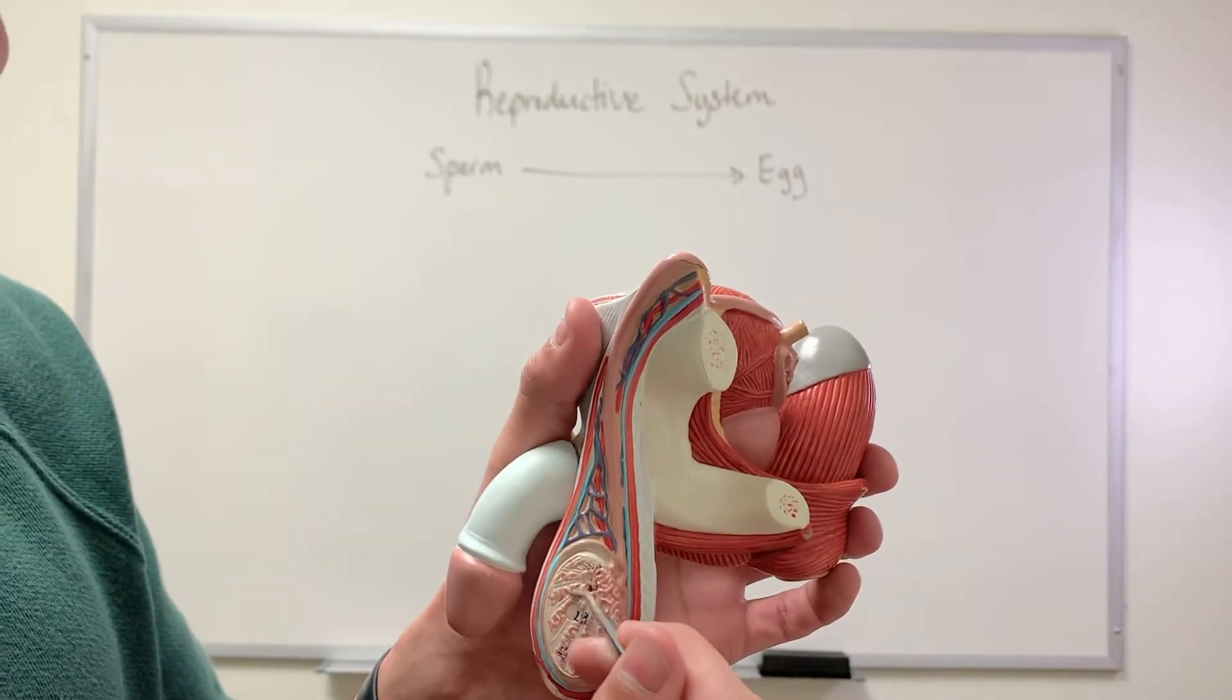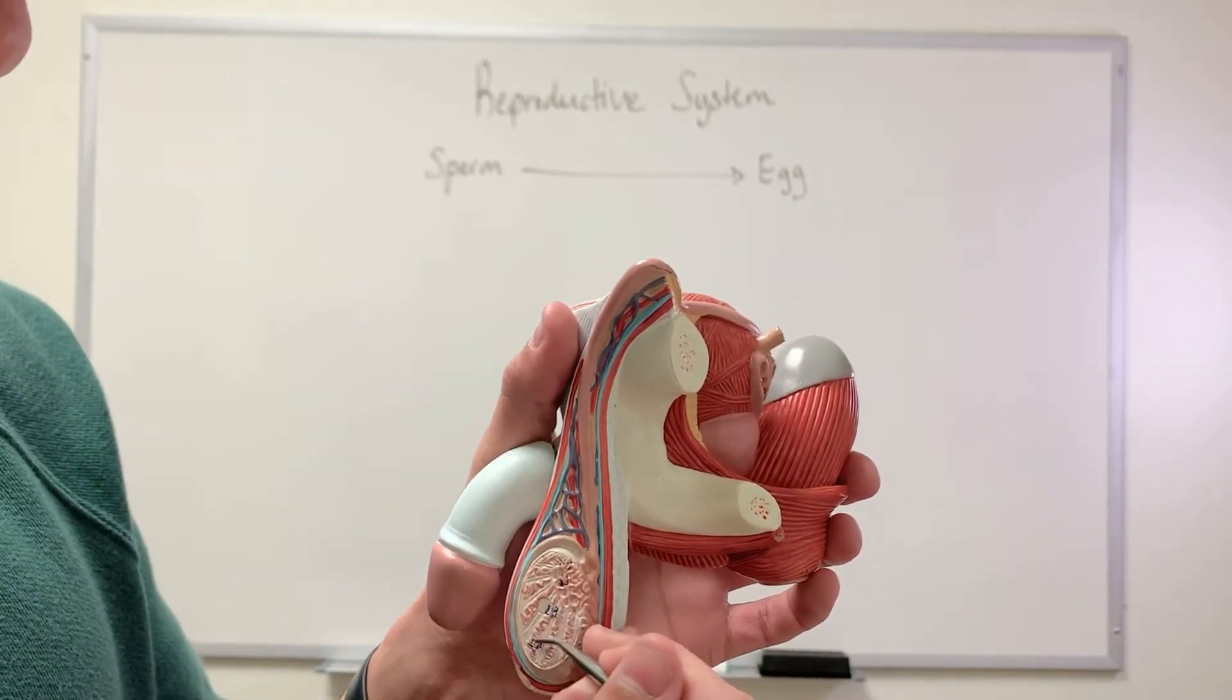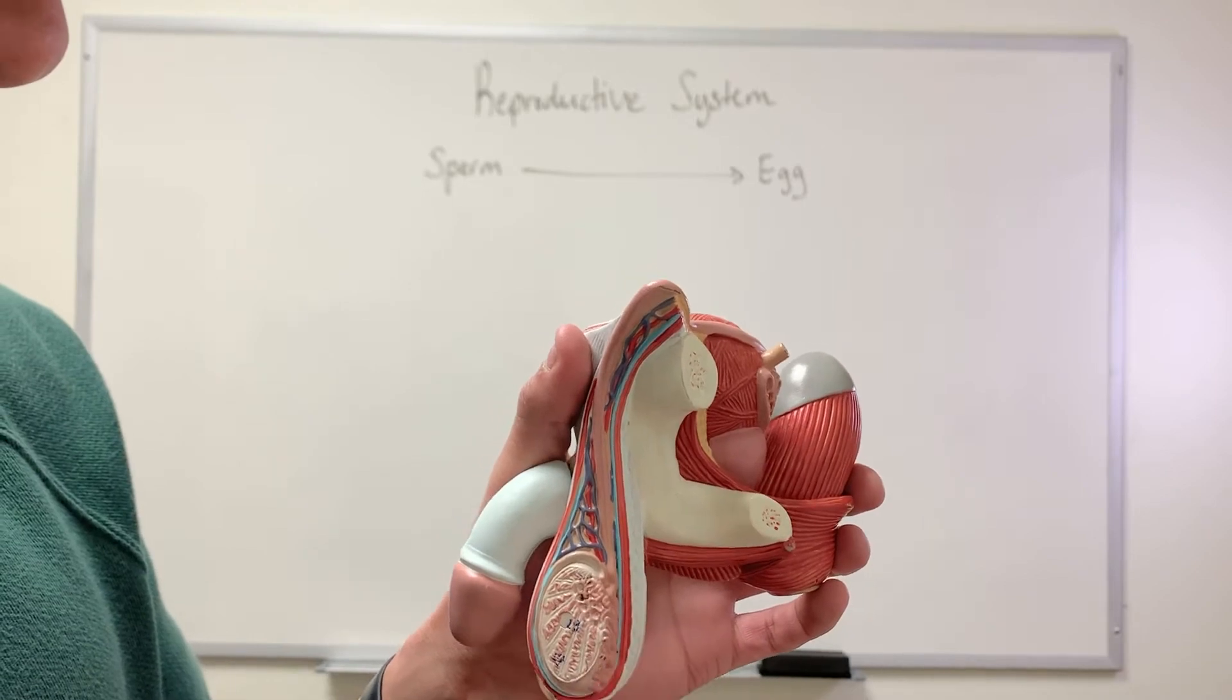This is known as the seminiferous tubules. So sperm is produced here within the testes.